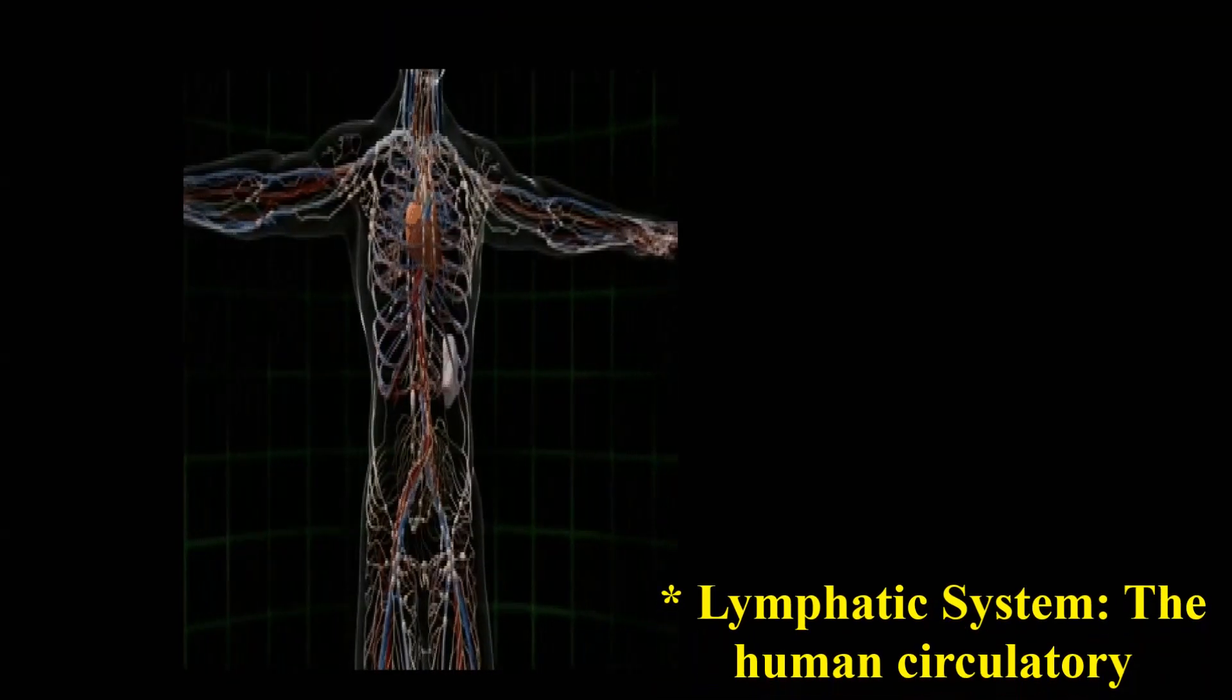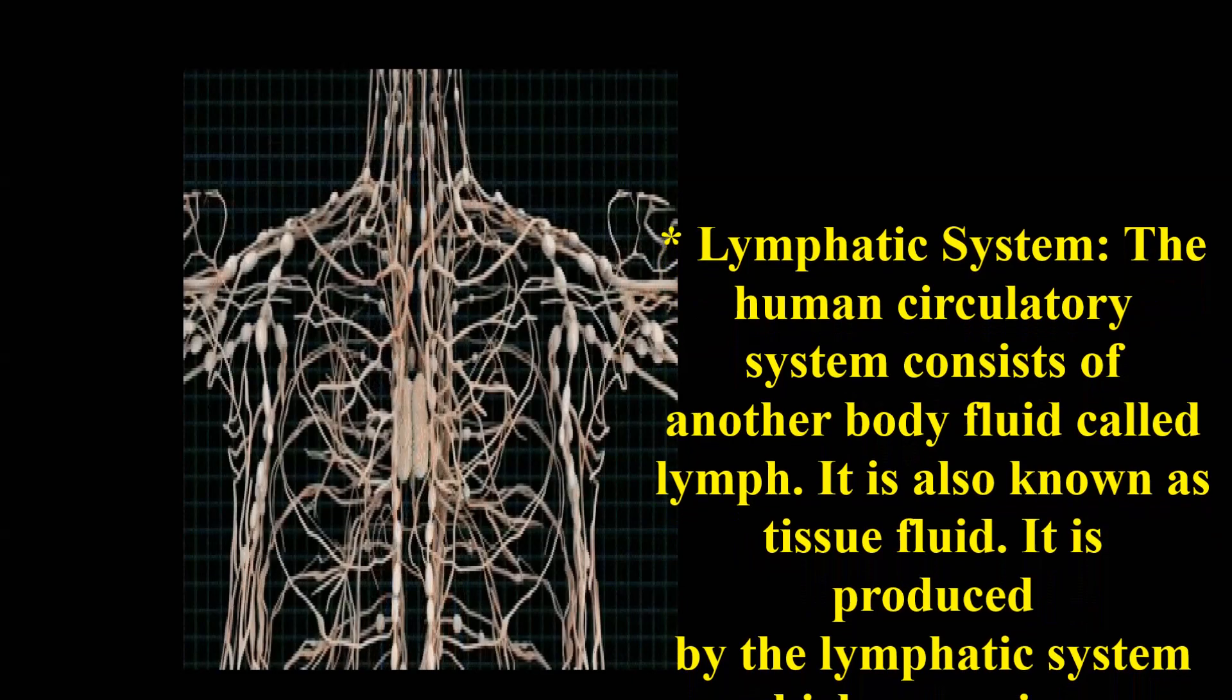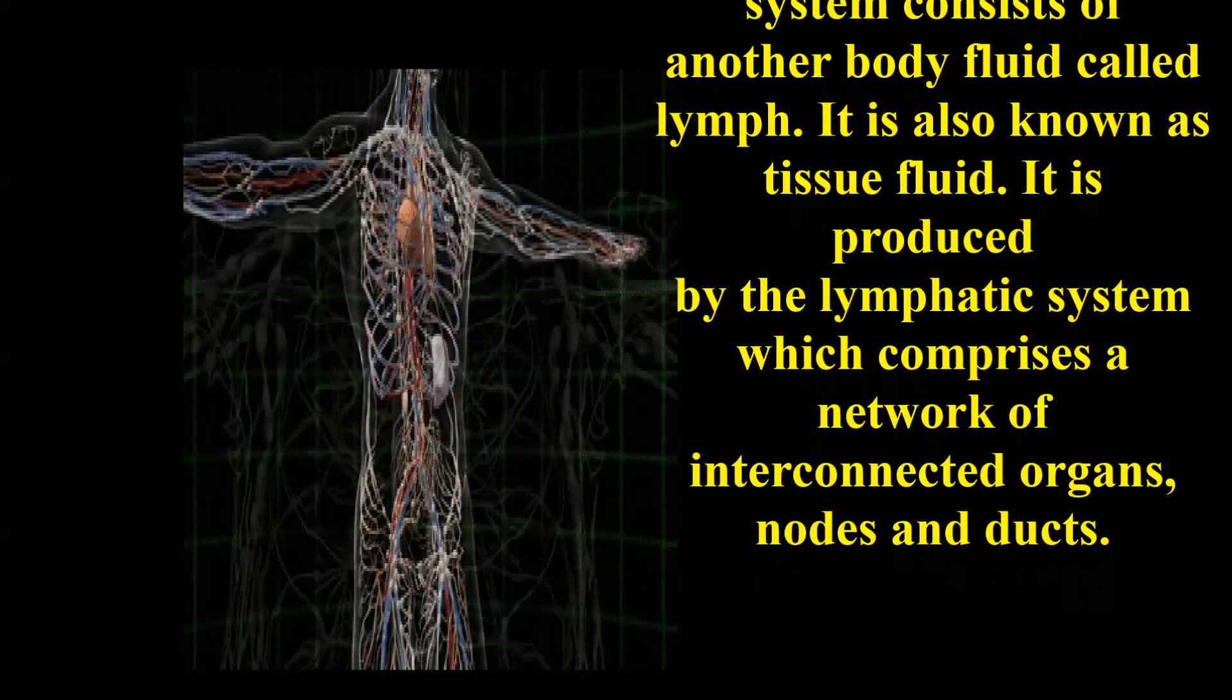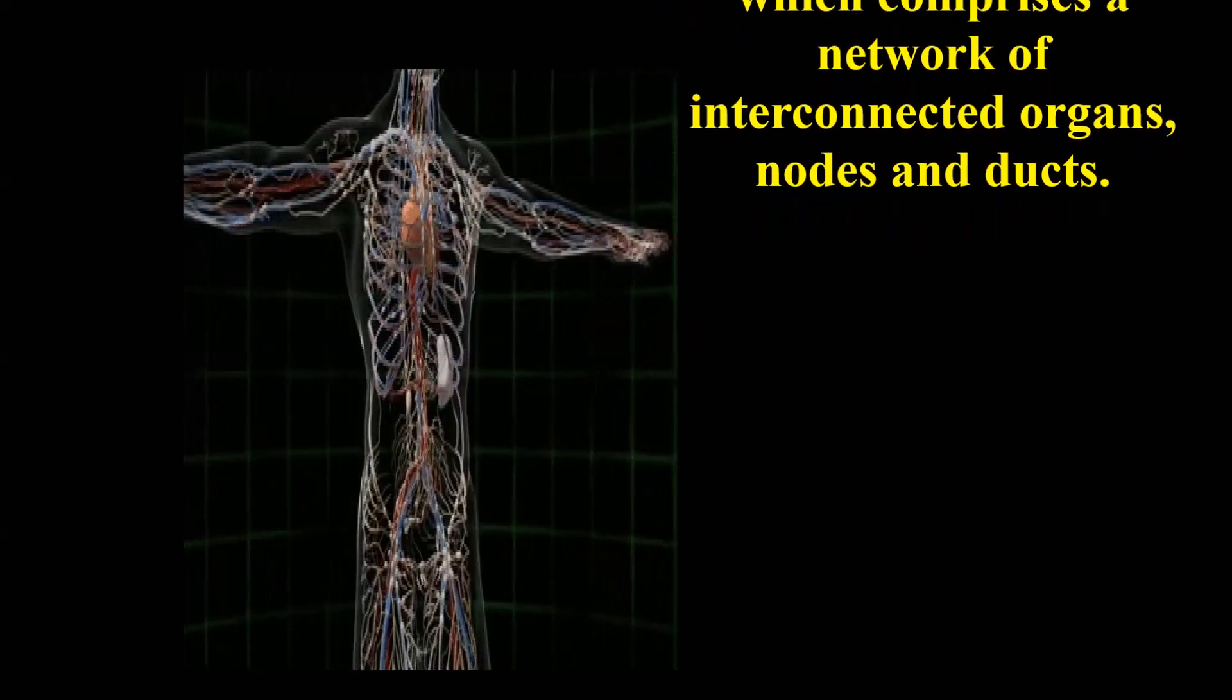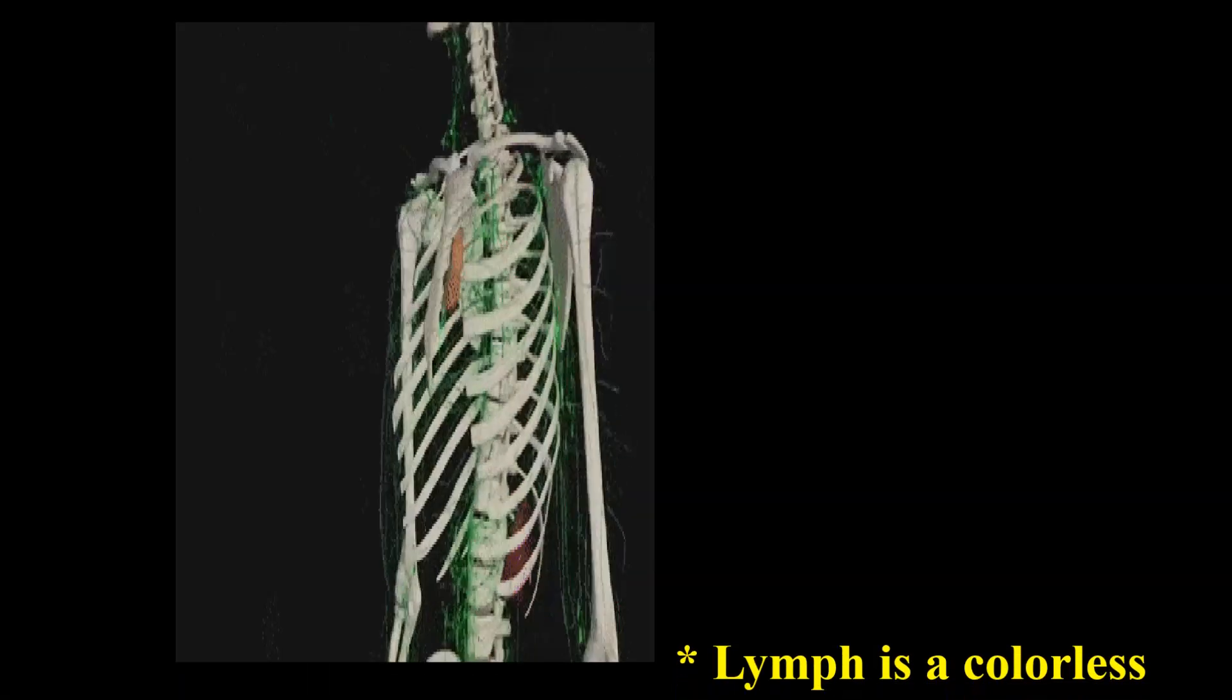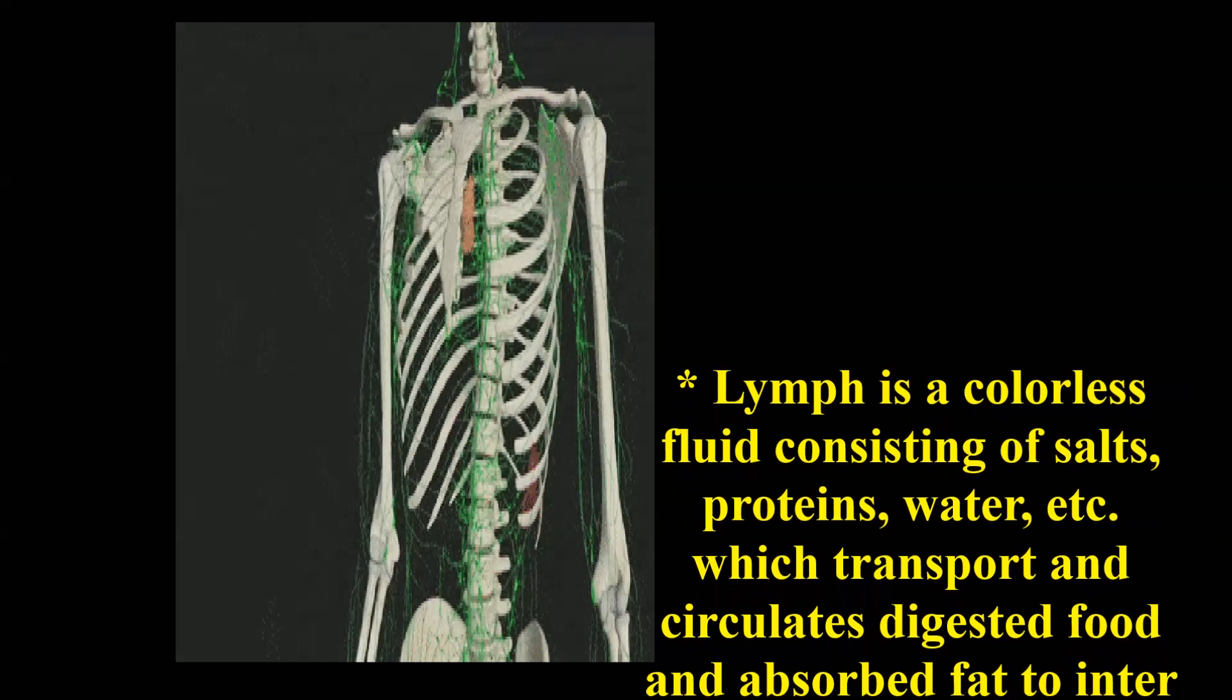The human circulatory system consists of another body fluid called lymph, also known as tissue fluid. It is produced by the lymphatic system which comprises a network of interconnected organs, nodes, and ducts. Lymph is a colorless fluid consisting of salts, proteins, water, etc.